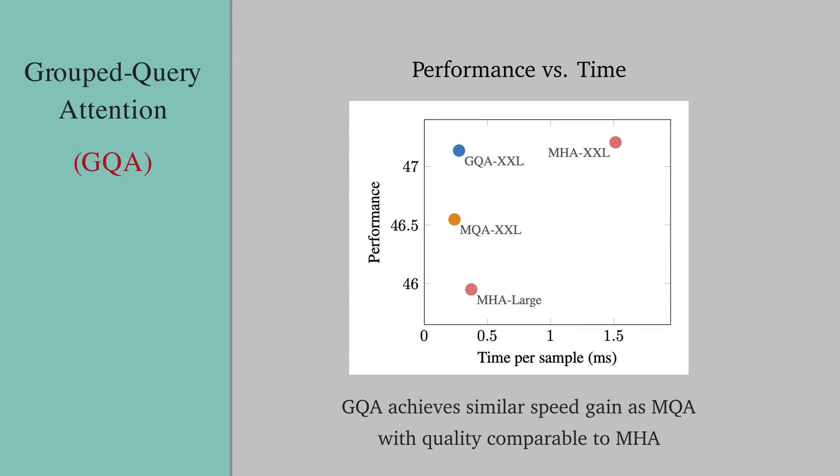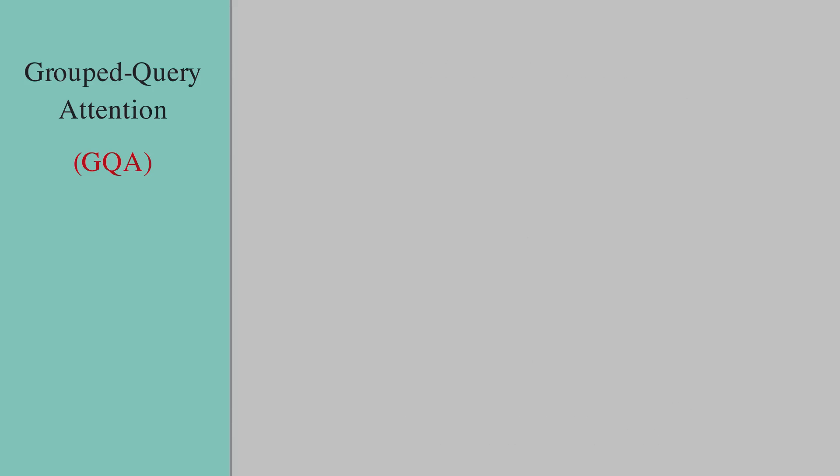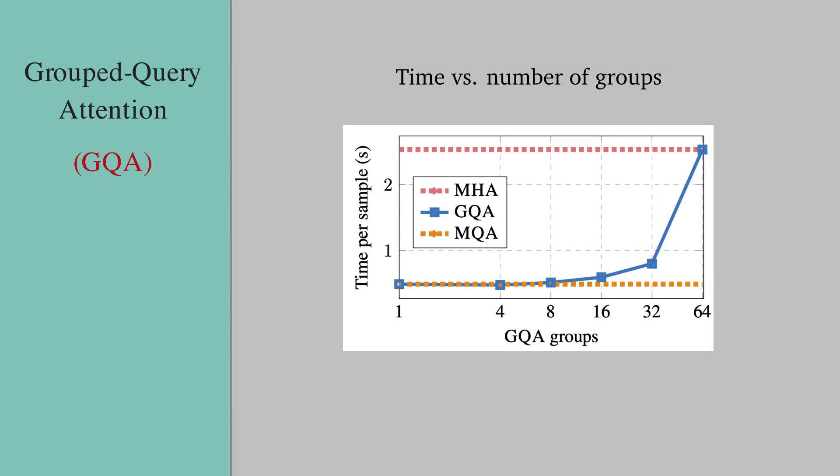Finally, this figure shows a case with 64 total number of heads. GQA can go from 1—that is identical to MQA—all the way to the maximum number of subgroups, 64, that would be identical to MHA. But you can see that going from 1 up to 8 subgroups does not add significant computational overhead. So using a curve like this for performance versus number of subgroups and performance versus time is a good way to determine the optimal number of subgroups.